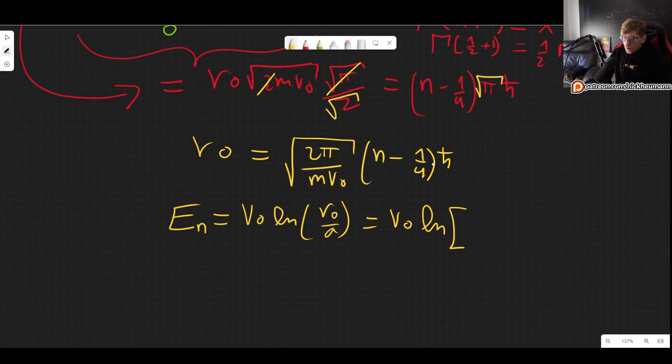So we plug that in and we get V0 natural log of, and let's see so we plug all this in. So we get square root of 2 pi m V0 and I will write the h bar right here. Then we have n minus one fourth. And in principle here you are already done.